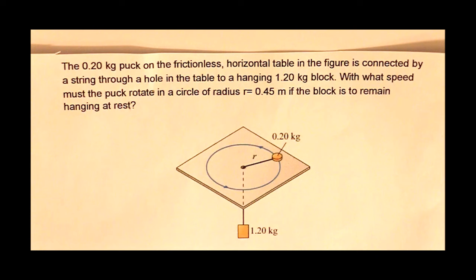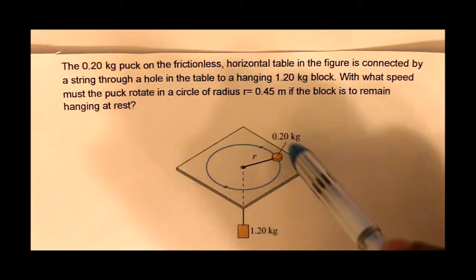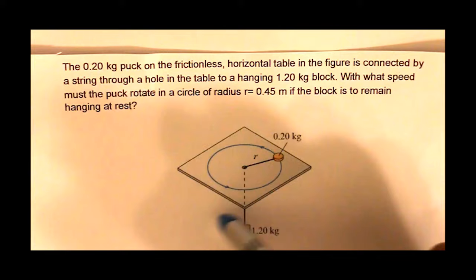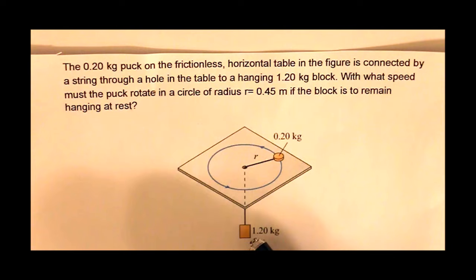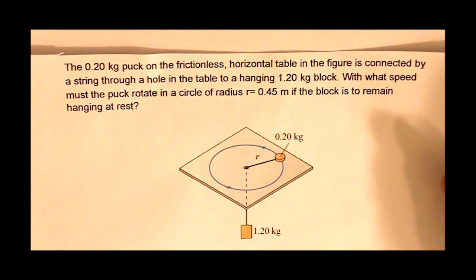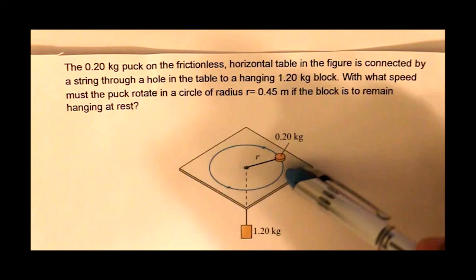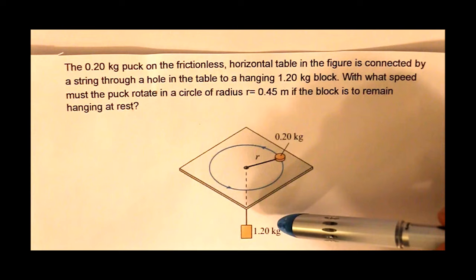So this is really simple. Basically this has to provide enough centripetal acceleration going in a circle for this to maintain its state of rest so that gravity does not pull it down. So basically what we have to do is set the mass of this puck times the centripetal acceleration equal to the force of gravity acting on this block.